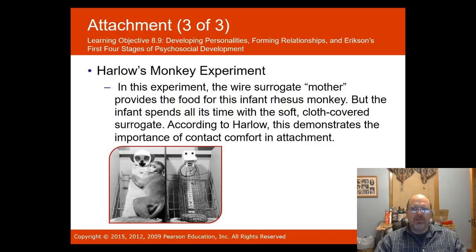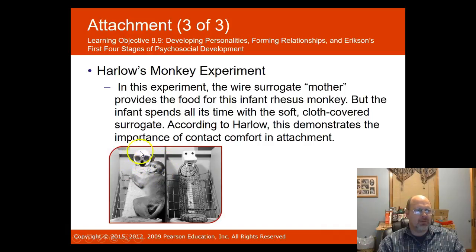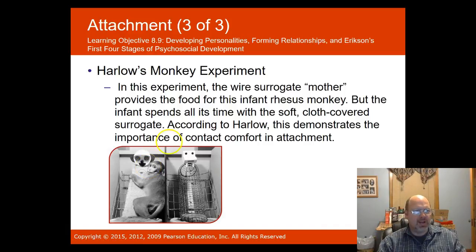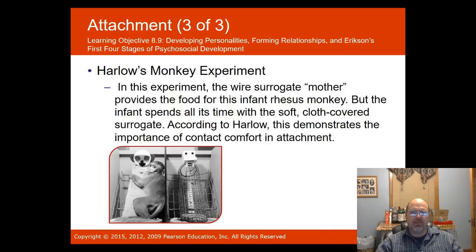Harlow in 1958 conducted the monkey experiment. In his experiment, a wire surrogate mother provided food for an infant rhesus monkey, but the infant spent all of its time with a soft cloth-covered surrogate that did not provide food. According to Harlow, this demonstrates the importance of contact comfort and attachment. This raised implications for human mothers who feed infants with bottles rather than breastfeeding.